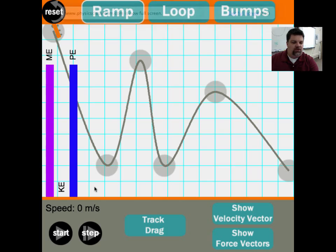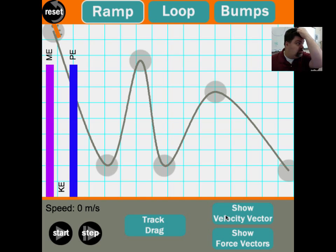So here I have a simple roller coaster. Now, if I hit start, what you're supposed to do is make some observations about the kinetic energy, mechanical energy, and potential energy. By default, this is set up to where there's no friction, no drag, anything like that.